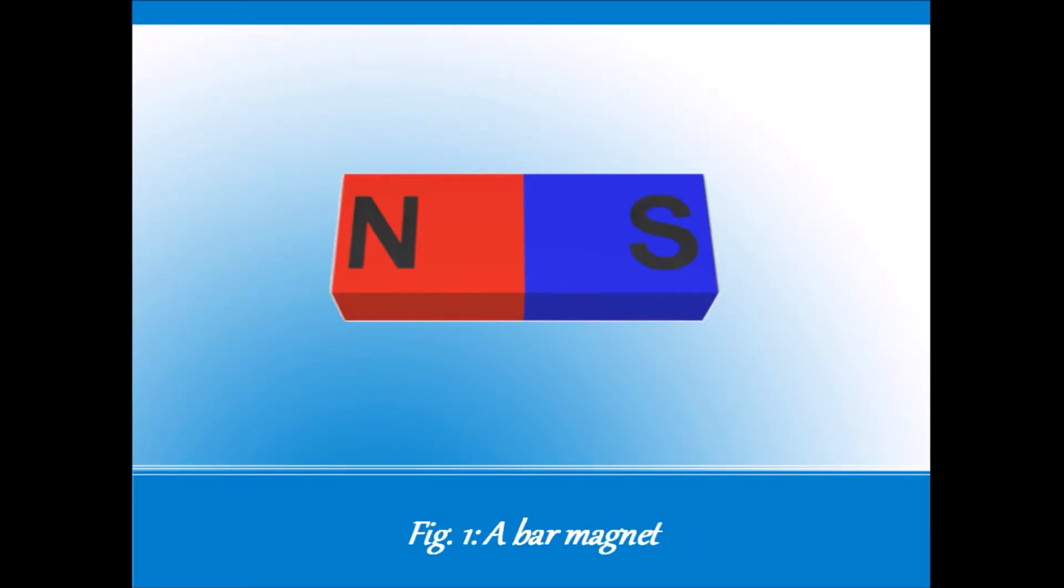This is a typical bar magnet. It has two letters, S and N, on it. What are they doing there? You may already know that a magnet has two opposing poles, north and south.